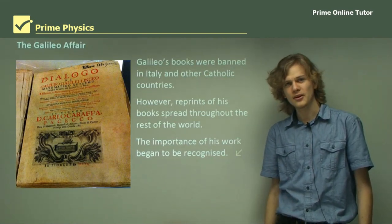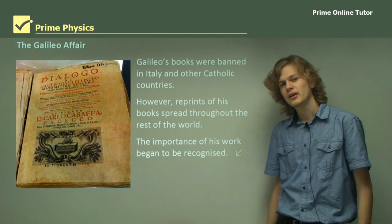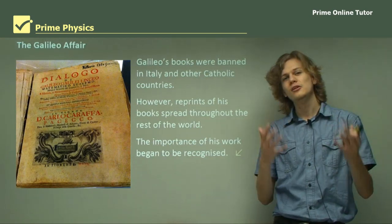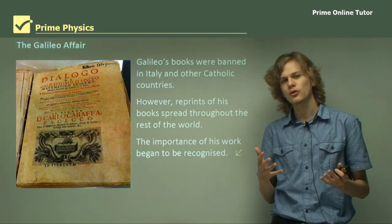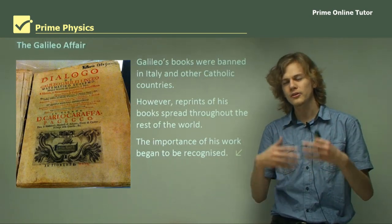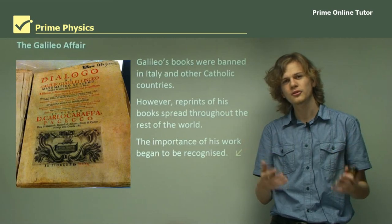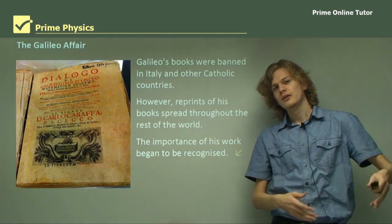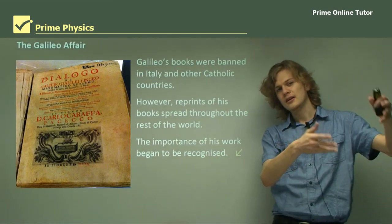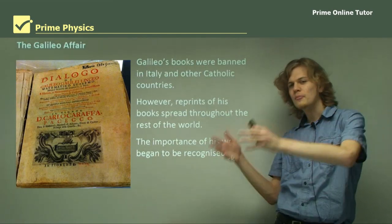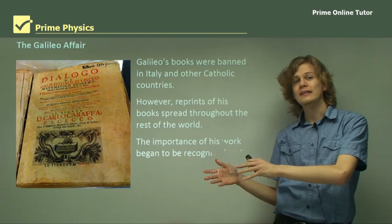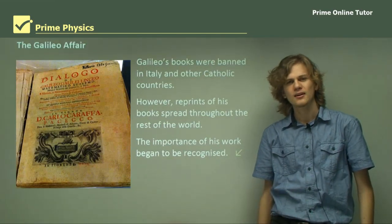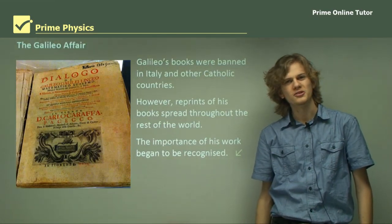That's the end of the theory. In this section, we've learned about various different heliocentric models of the universe, starting from Aristarchus of ancient Greece and going all the way up to Galileo Galilei in the 17th century. Let's go on to some questions.